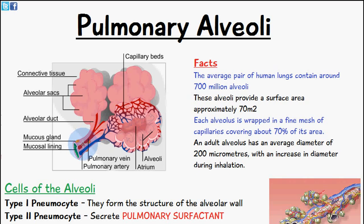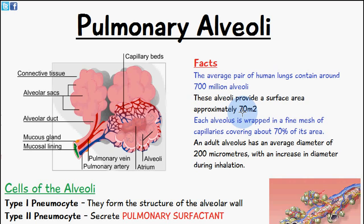You can see how the vessels have turned red, then blood goes back up into the pulmonary vein, to the left side of the heart, and gets pumped into the systemic circulation. Looking at the structure of the pulmonary alveoli, you can see the alveolar sacs, the capillary bed, mucus glands, mucus lining, and connective tissue. The average pair of human lungs contains around 700 million alveoli, providing a surface area of approximately 70 meters squared. Each alveolus is wrapped in a fine mesh of capillaries covering around 70% of its area, and the adult alveolus has an average diameter of 200 micrometers.